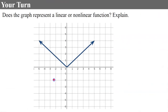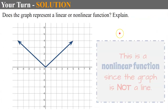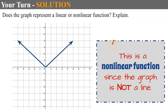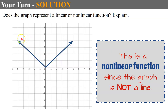Your turn again. Determine linear or nonlinear — don't forget to explain. This is a nonlinear function. Students sometimes get confused because each segment is straight and has a constant rate of change, but there is a change in direction. The rate of change is not the same throughout, so it's nonlinear. This is an absolute value function in the shape of a V.